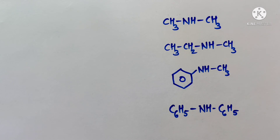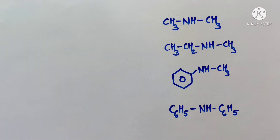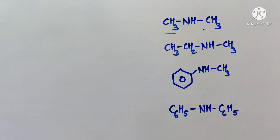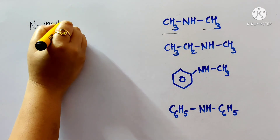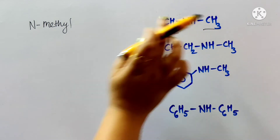For secondary and tertiary amines, IUPAC names are given as N-substituted derivatives of primary amines. The largest alkyl group attached to nitrogen is taken as the parent, and the other alkyl group is considered an N-substituent. For example, dimethylamine has two methyl groups on nitrogen; for the IUPAC name, one methyl is the parent (methanamine) and the other is the N-substituent, giving N-methylmethanamine.